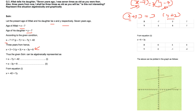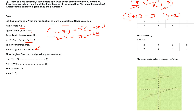From the first equation: X − 7 = 7Y − 49, which gives X − 7Y = −42. From the second equation: X + 3 = 3Y + 9, which rearranges to X − 3Y = 6. So our two simplified equations are X − 7Y = −42 and X − 3Y = 6.